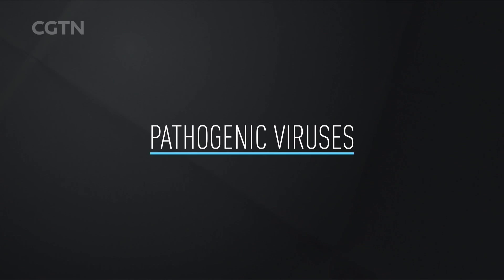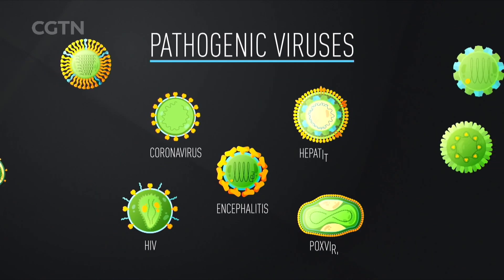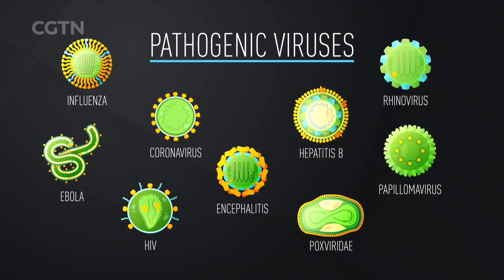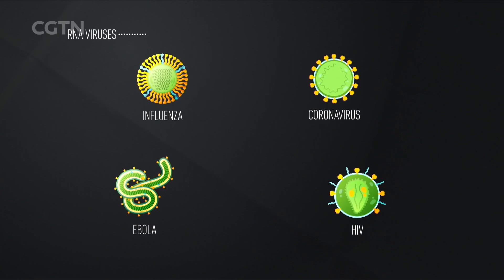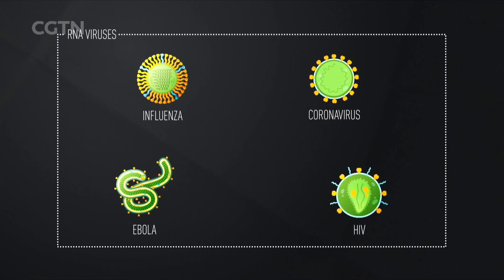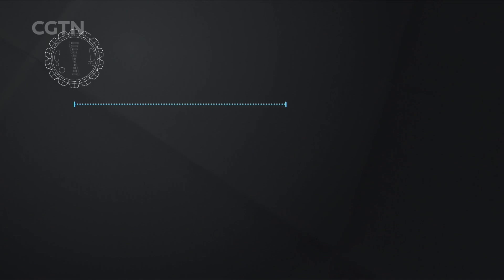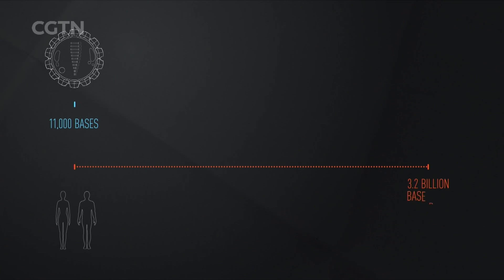Although some can be beneficial, viruses are often understood as pathogenic or disease-causing. Most pathogenic viruses that emerge to attack human cells are RNA-based. This includes Ebola, HIV, influenza and coronavirus. The average RNA virus is 11,000 bases in comparison to the 3.2 billion in human DNA, but they can cause huge amounts of damage.